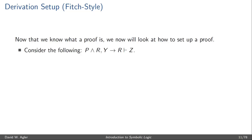Now that we have a clear sense of what a syntactic entailment is, what a proof is, and we have the general outline of the deductive apparatus, the next thing to look at is how to solve proofs. One of the steps towards solving proofs is setting the proof up. So let's take a look at an example.